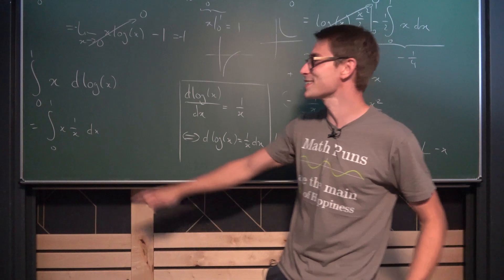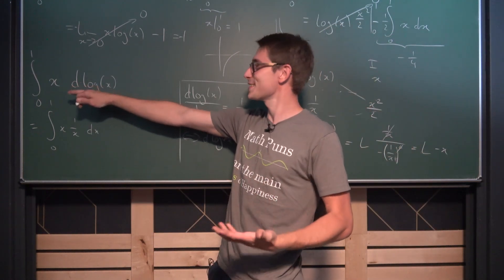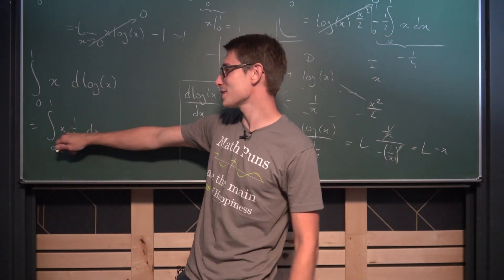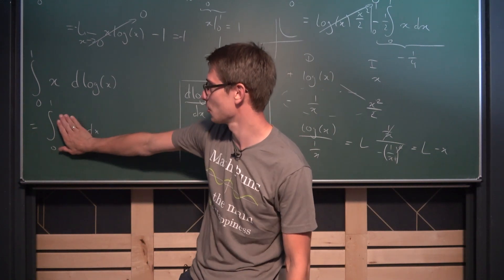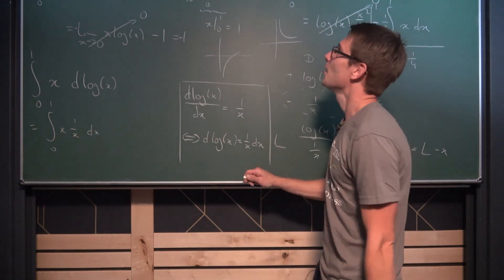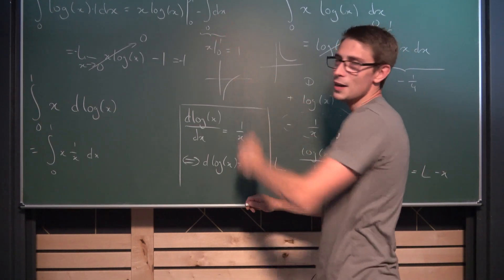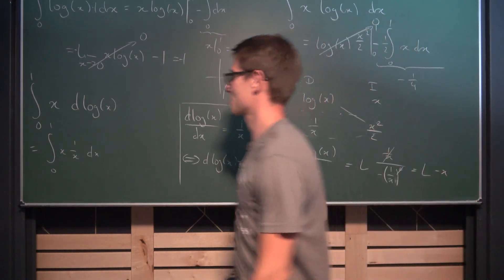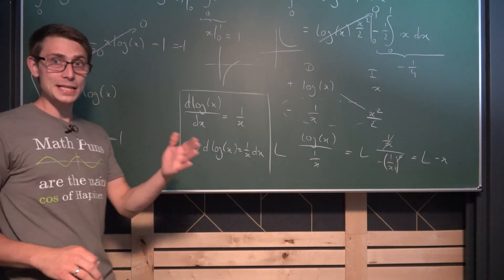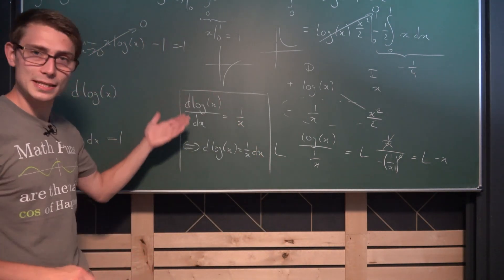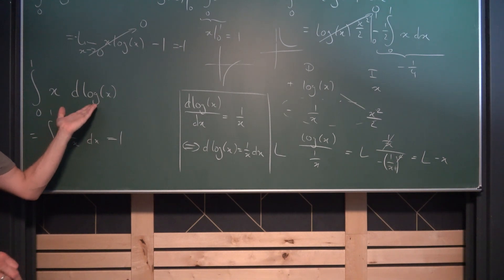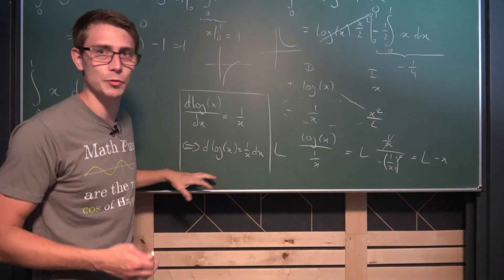This demystifies the Riemann-Stieltjes integral when our function is continuously differentiable — we can just proceed as normal. As a viewer exercise, in an analysis class the professor would ask you to prove that x is continuously differentiable, to formally justify using the aforementioned property. This is the only rigorous step left implicit here.